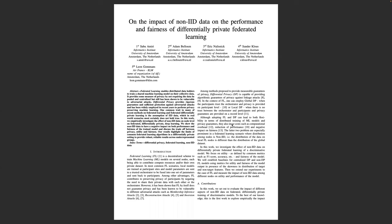In this paper, we consider a federated learning setting and we investigate the impact of non-IID label distribution among different nodes on performance and fairness of the model trained with differential privacy.